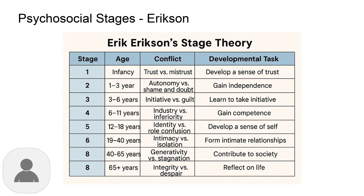Erikson's theory outlines eight distinct stages of psychosocial development, each characterized by a specific conflict that must be resolved. These stages range from trust versus mistrust in infancy through integrity versus despair in late adulthood. Each stage builds upon the previous ones, creating a comprehensive framework for understanding human development across the lifespan.